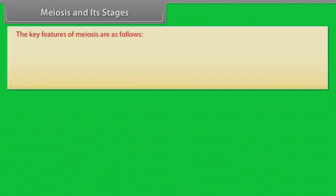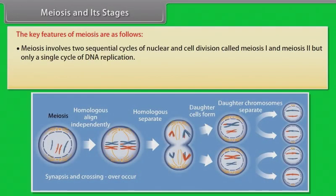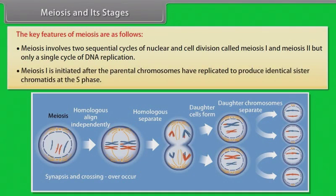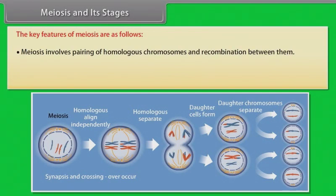The key features of meiosis are as follows: Meiosis involves two sequential cycles of nuclear and cell division called meiosis I and meiosis II, but only a single cycle of DNA replication. Meiosis I is initiated after the parental chromosomes have replicated to produce identical sister chromatids at the S phase. Meiosis involves pairing of homologous chromosomes and recombination between them. Four haploid cells are formed at the end of meiosis II.